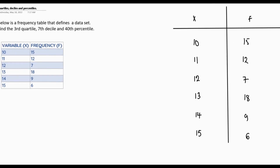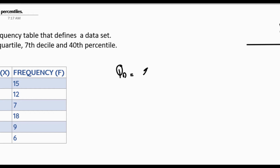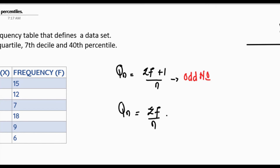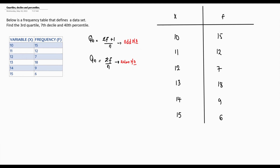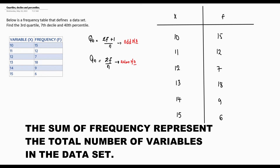The formula for the quartile: Qn equals (summation f + 1) divided by n. We use this variation when we have an odd number of data. We also have Qn equals summation f divided by n, which we use when we have an even number of data. The variation we use for the third quartile will be based on the number of data sets we have, determined by the sum of the frequency, summation f.